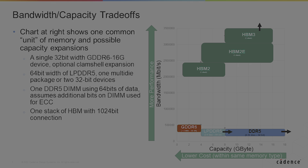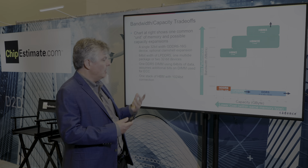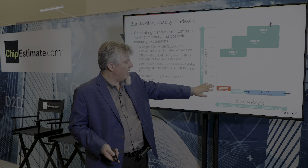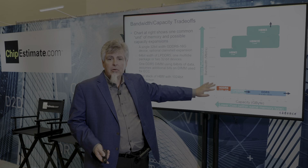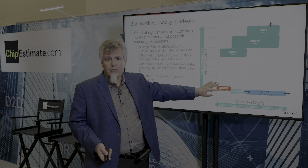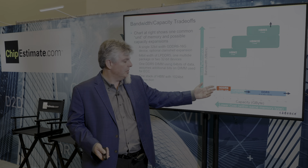What I want to show here is one of the criteria we use for making these determinations. I'd like to draw this chart: bandwidth on the y-axis and capacity on the x-axis. More bandwidth means more performance, and higher capacity gets more expensive in that direction, so lower cost would be in the other direction. Looking at the major memory types: GDDR6 is typically a very low capacity but high bandwidth solution, especially popular with AI accelerators and graphics processing units.